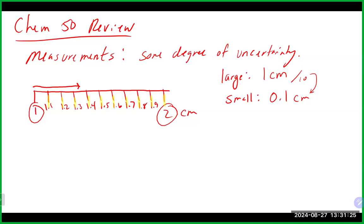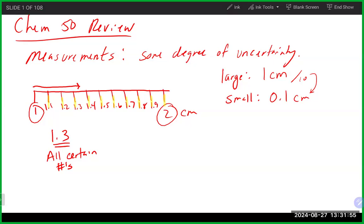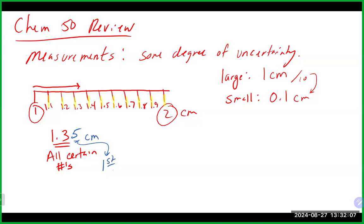Whenever you take a measurement, you should always have certain numbers that everyone agrees on. In this case, my arrow is at least 1.3 — these are the certain numbers. However, my arrow is clearly not exactly at 1.3 and not exactly at 1.4. It's somewhere between the two, and this is where the uncertainty comes into play. It kind of looks halfway, so I would record a 5 — this is the first uncertain number.